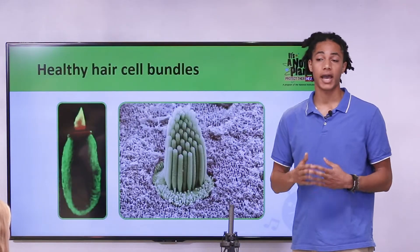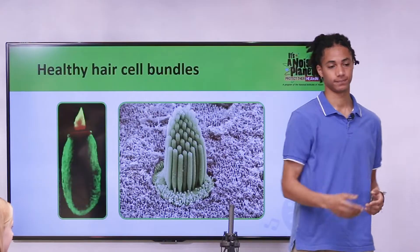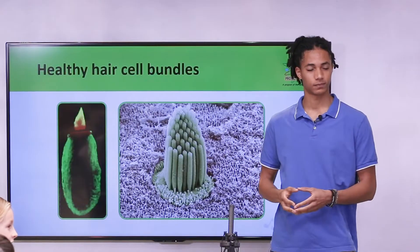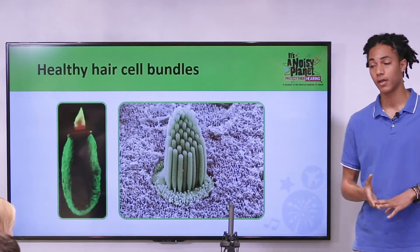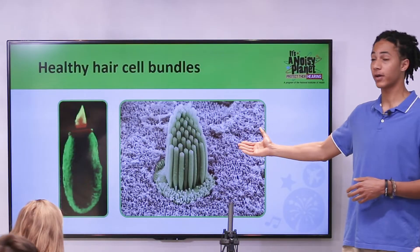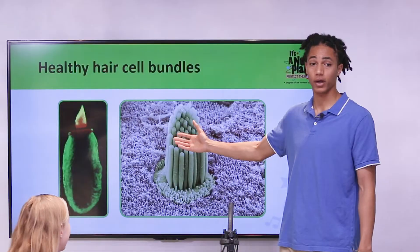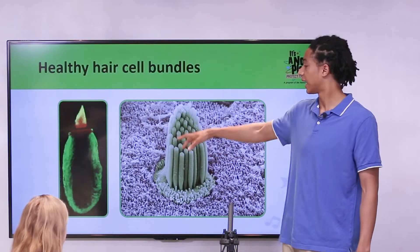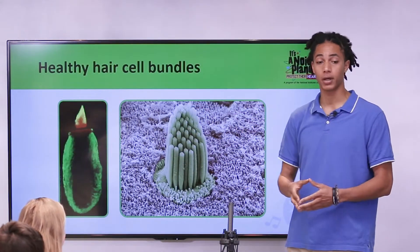So how do you think sound damages our hearing? Student responds: If the bones in your ear vibrate too much. While that is possible, the most common cause of hearing loss is damage to the hair cells. This is a picture of a hair cell — the green part of this image is the actual hair cell and the tiny hair-like structures on top are called the hair cell bundle.